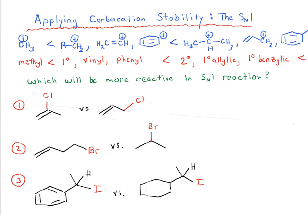There are two key factors to think about: carbocation stability is influenced by substitution pattern and also by resonance. In this video, I've put together three quick and fairly straightforward exercises asking which of these substrates is going to be more reactive in the SN1 reaction.